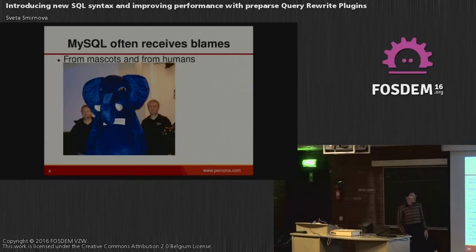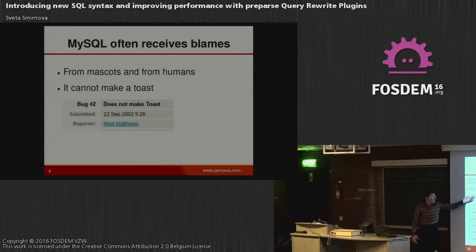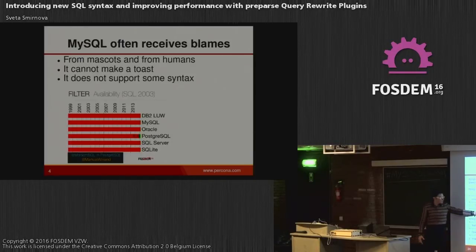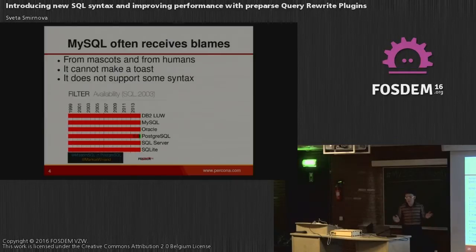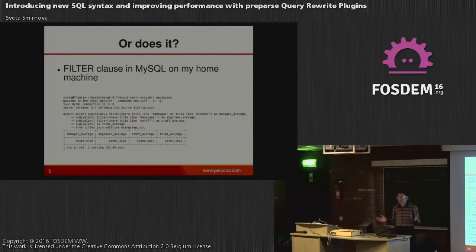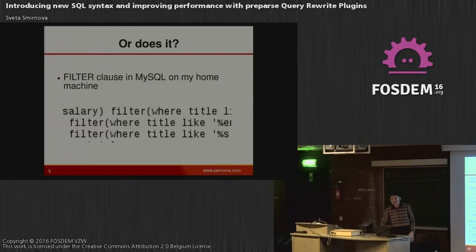Here is the result before the custom plugin: this is taken on my laptop with spinning disk, so that's why the numbers are big. It's a big join — it took 25 seconds and two on-disk temporary tables were created. And with the custom hint plugin, it's six seconds — no disk-based temporary tables created, it's all in memory. Full 4x speed gain. This is how we can increase the performance of our application with pre-parse plugins.